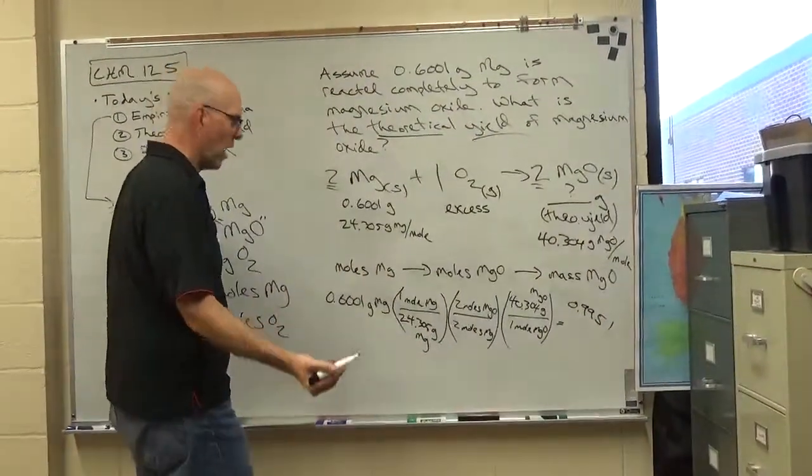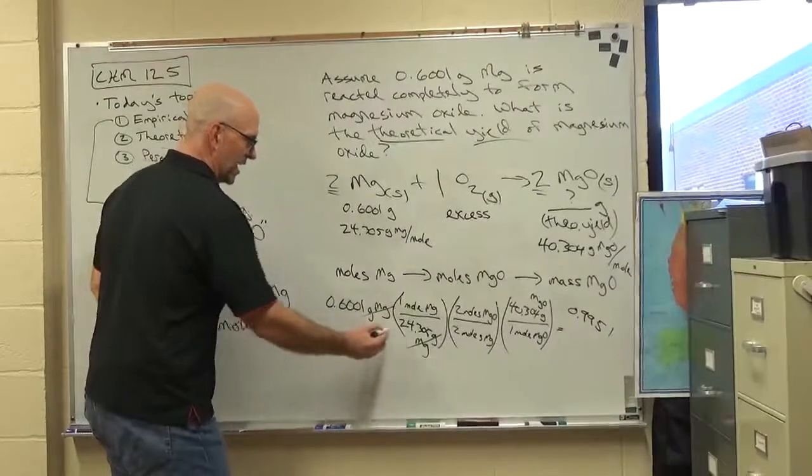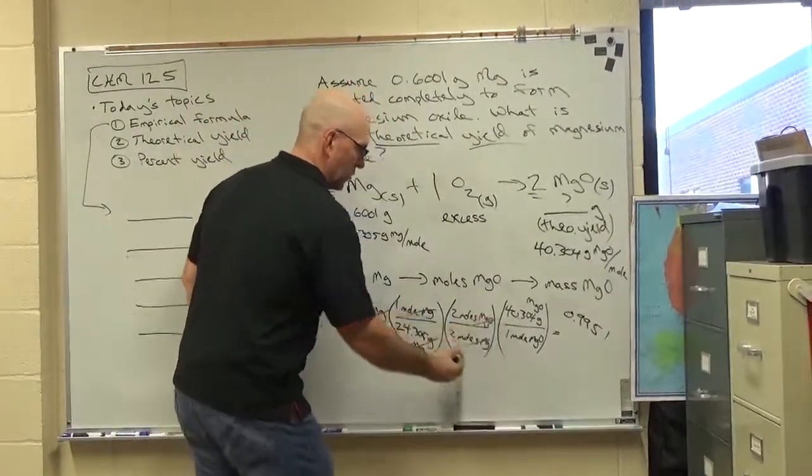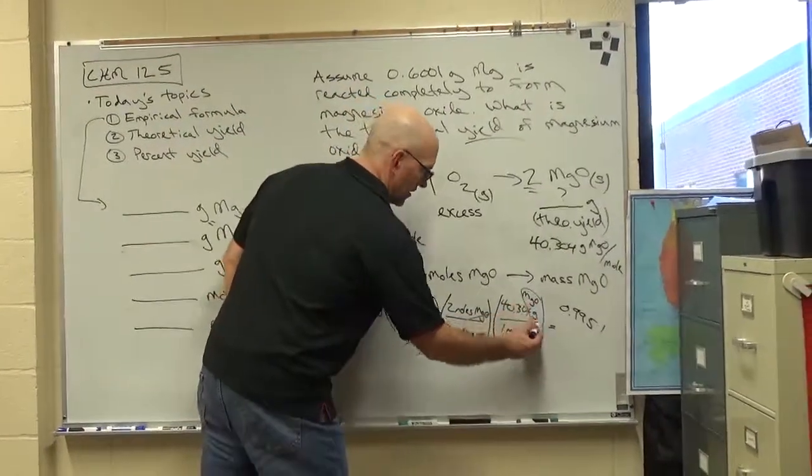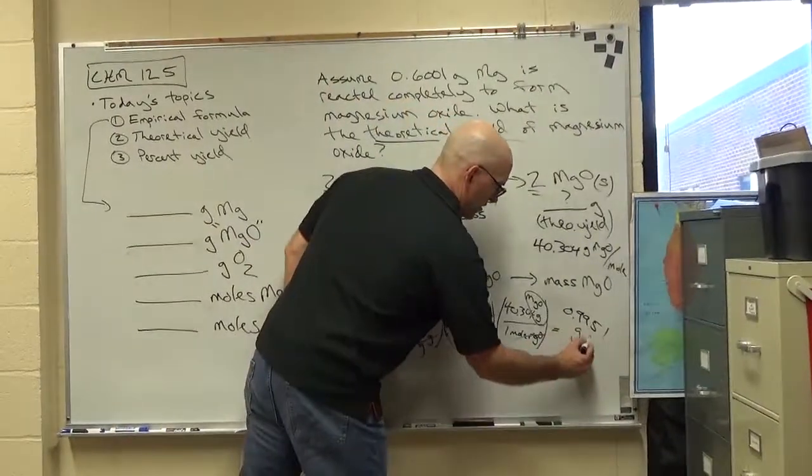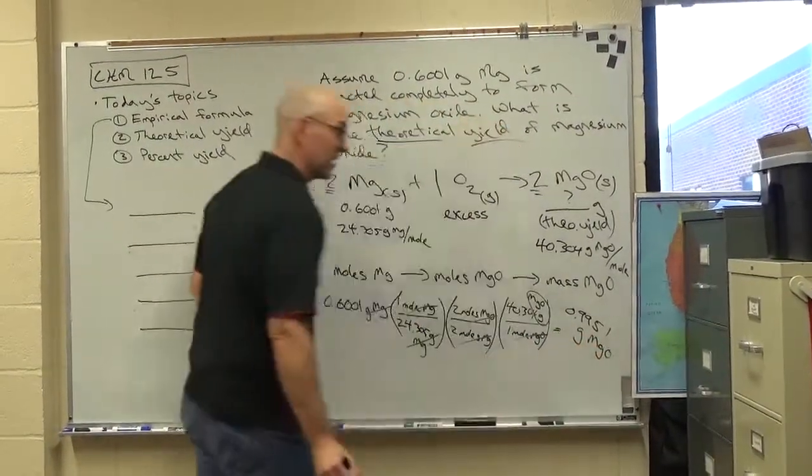Now 0.9951 what? Well, grams of magnesium cancel, moles of magnesium cancel, moles of MgO. These are the units. Grams of MgO. So that's our theoretical yield.